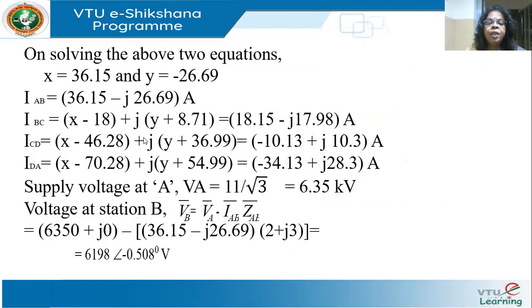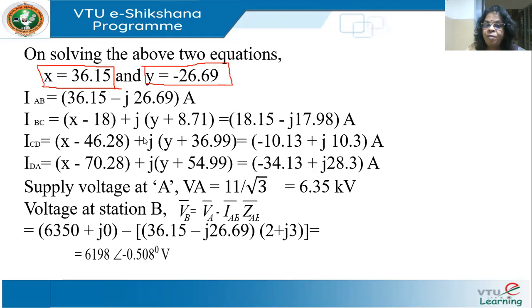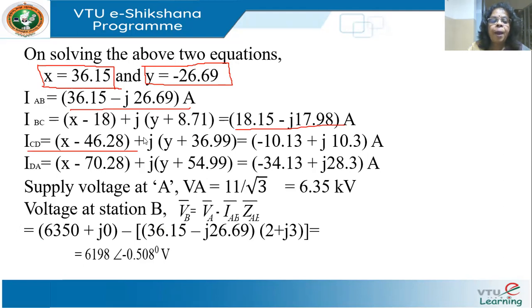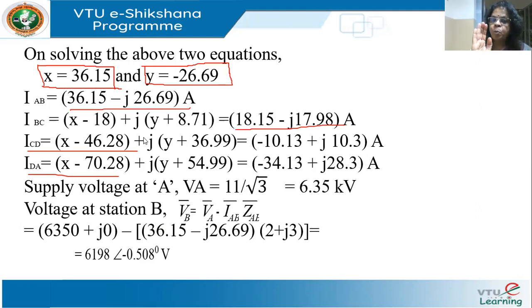Solving the two equations, I get X = 36.15 and Y = −26.67. So the current IAB = 36.15−j26.67. Substituting back, I can find IBC, ICD, and IDA. The problem is solved — I have not used any concepts of distribution or power systems, just simple KCL and KVL.